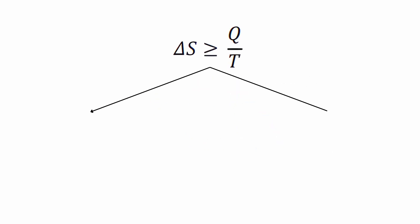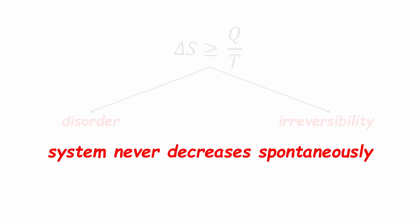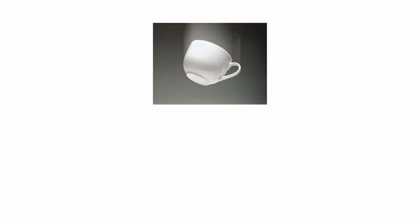This inequality indicates that disorder or irreversibility in a system never decreases spontaneously. For example, if you drop a cup and it breaks, the pieces don't reassemble themselves.